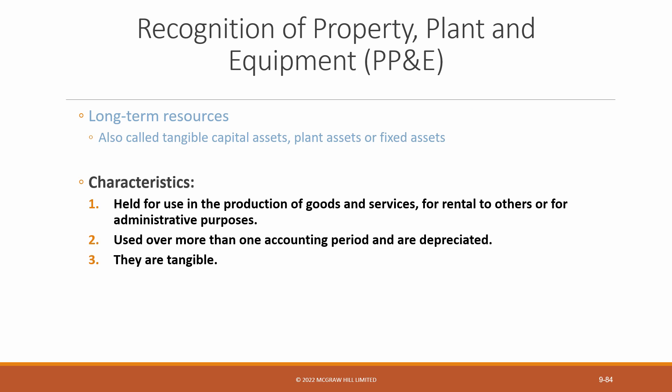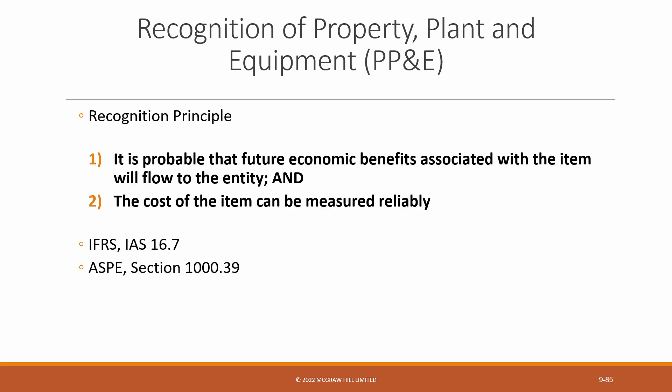So, keep in mind that the standards clearly indicate that an item of property, plant and equipment must be tangible, last for more than one accounting period, be depreciated, and be used to generate revenue for the entity. In addition, in order to be recognized on the financial statements, these assets must have benefits which flow to the entity and the cost must be measurable.